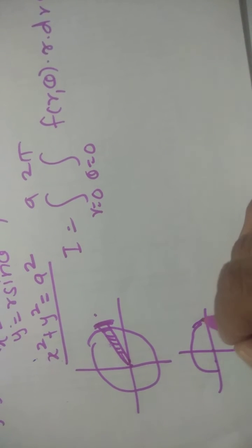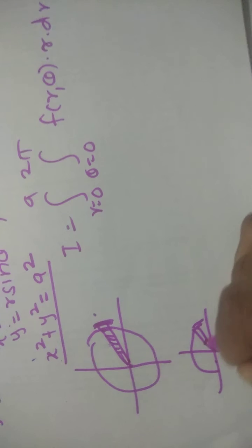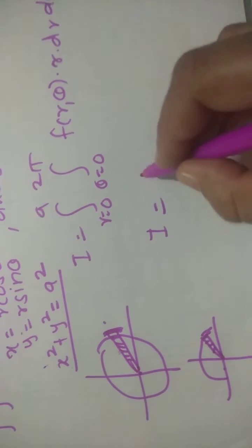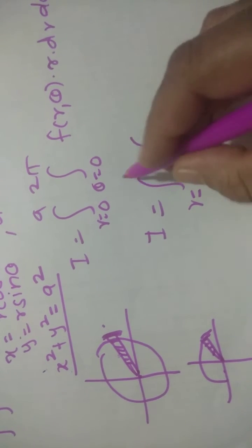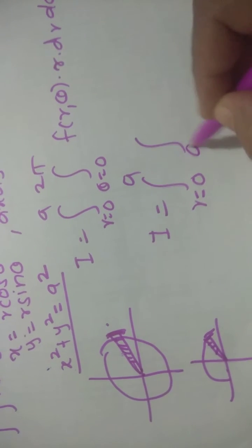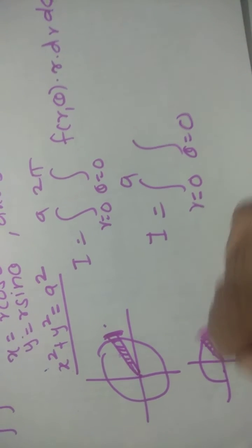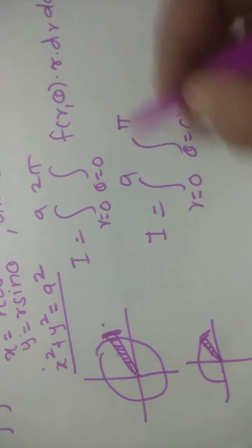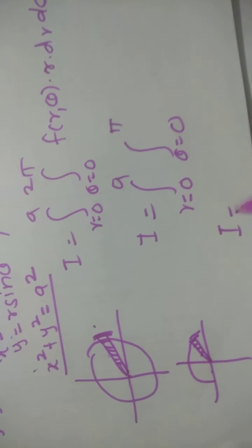So in that case, r is equal to 0 to a, same circle, but theta varies from 0 to pi only.